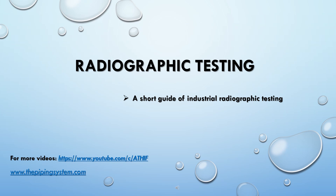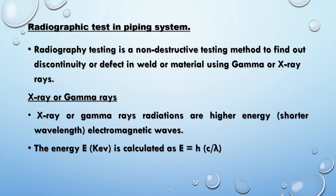Radiographic testing: a short guide to industrial radiographic testing. Radiographic testing in piping systems is a non-destructive testing method used to find discontinuities or defects in welds.